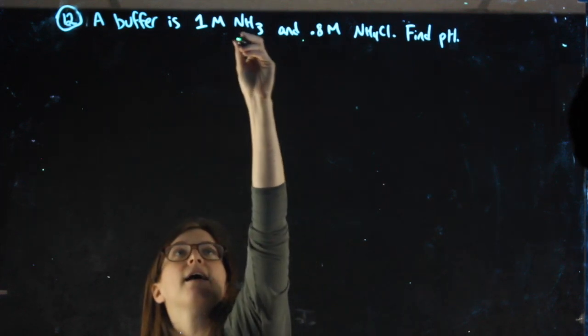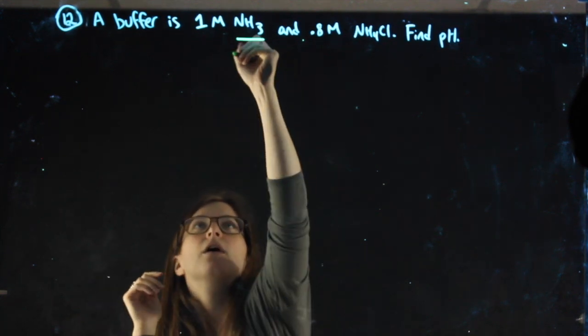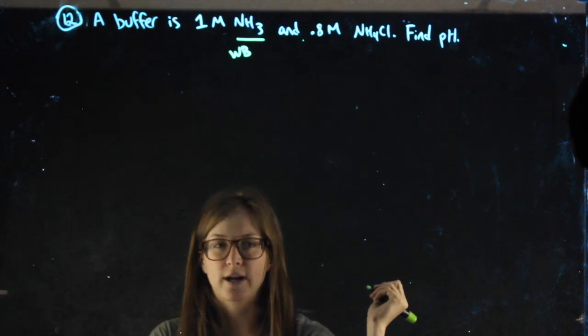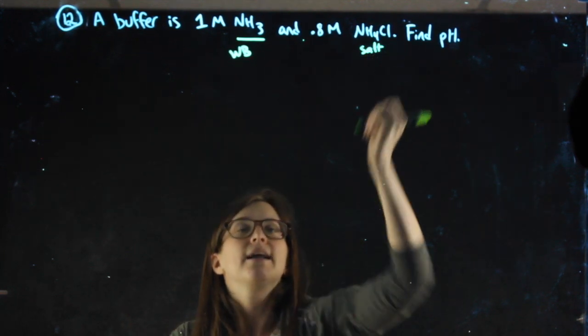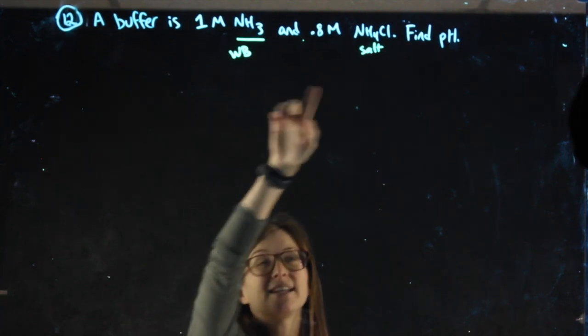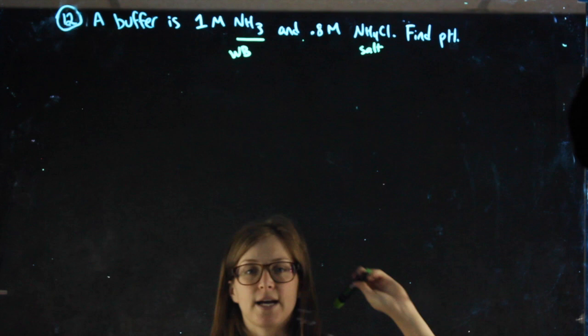Looking at NH3, that's a weak base, it's one we've worked with a ton, so we should know that's a weak base. Your chart can confirm that. NH4Cl is a salt. I already have a weak base, I need to find the weak acid hiding in the salt, that should be the conjugate to NH3.